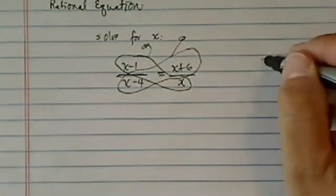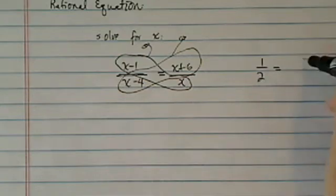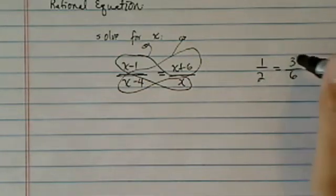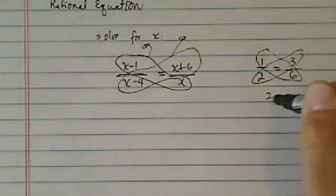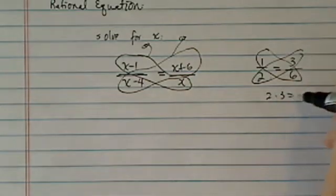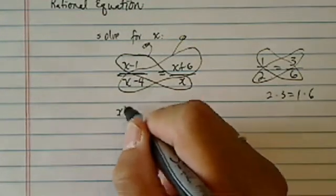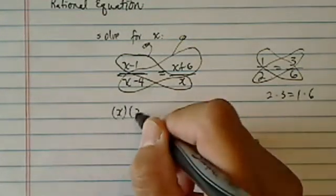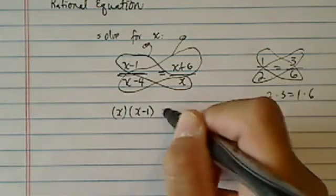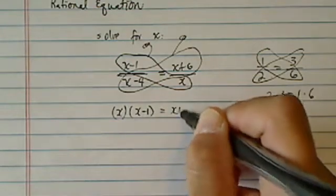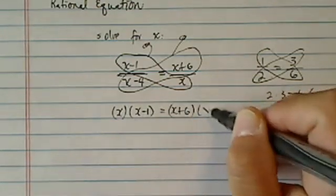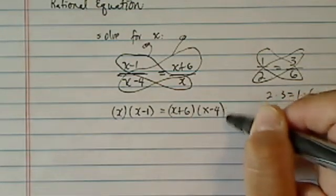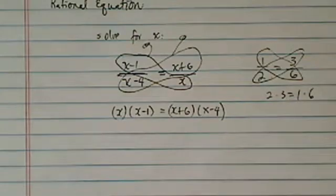The reason that it works is: 1 over 2, let's say, is equal to 3 over 6. If you cross multiply, you get 2 times 3 equal to 1 times 6. I would do the same thing here: x times (x minus 1) is equal to (x plus 6) times (x minus 4). So in one step, you're out of those dreadful fractions.